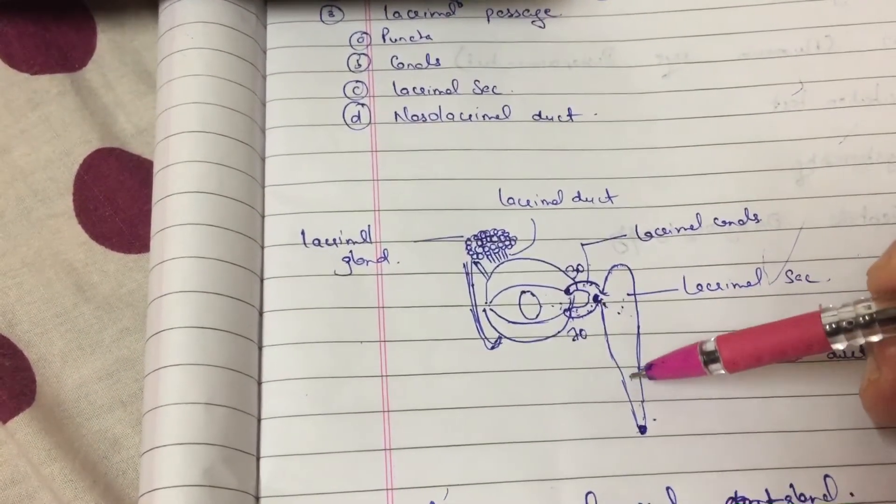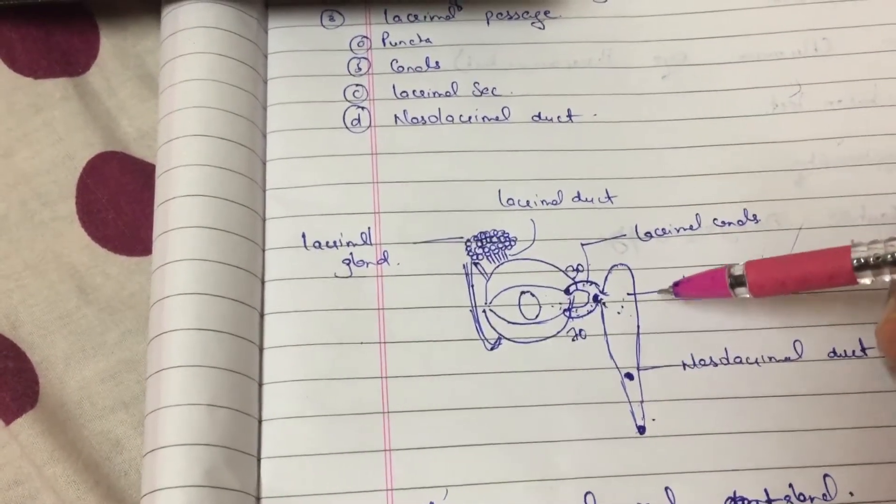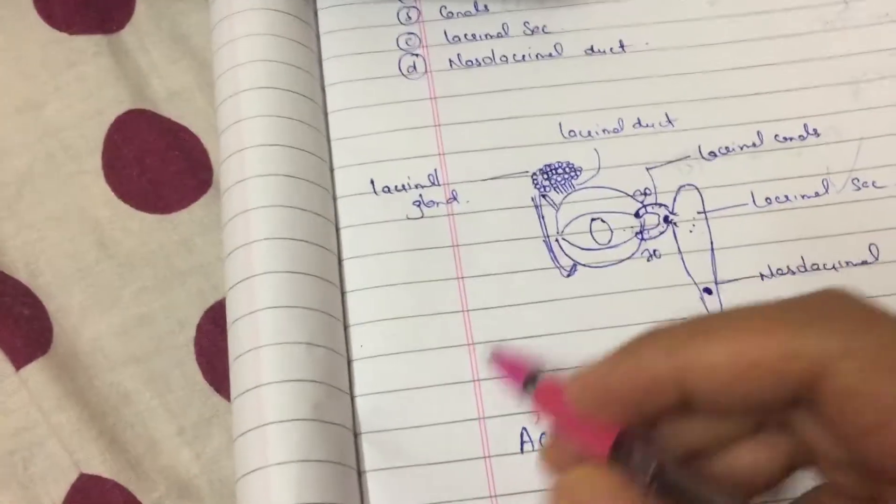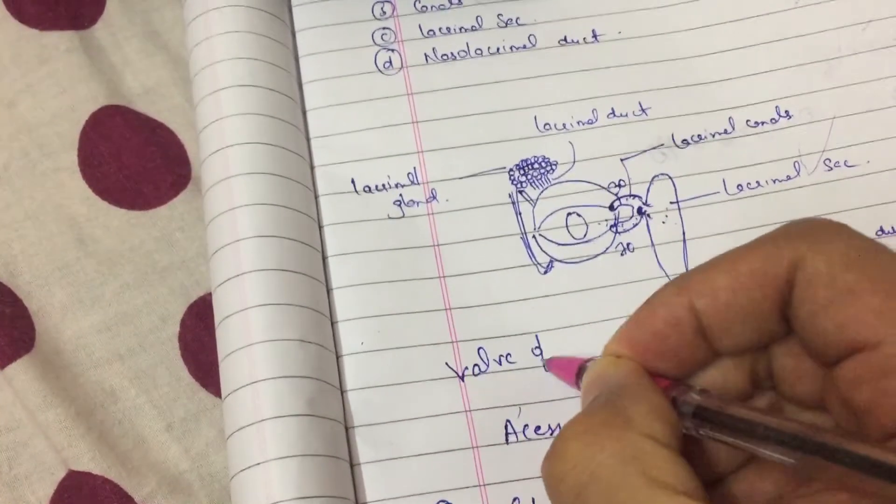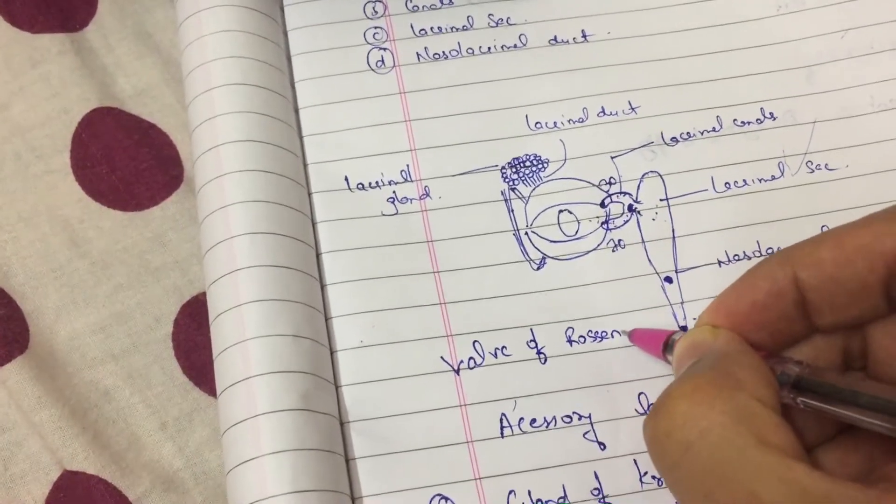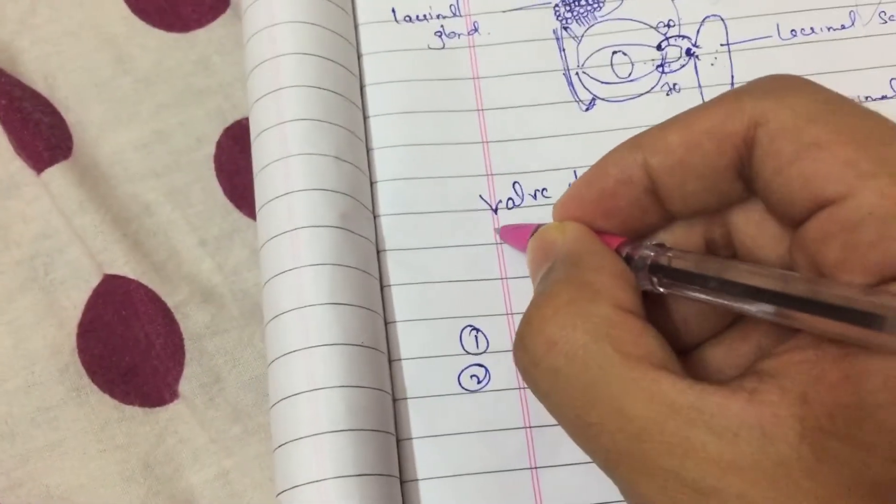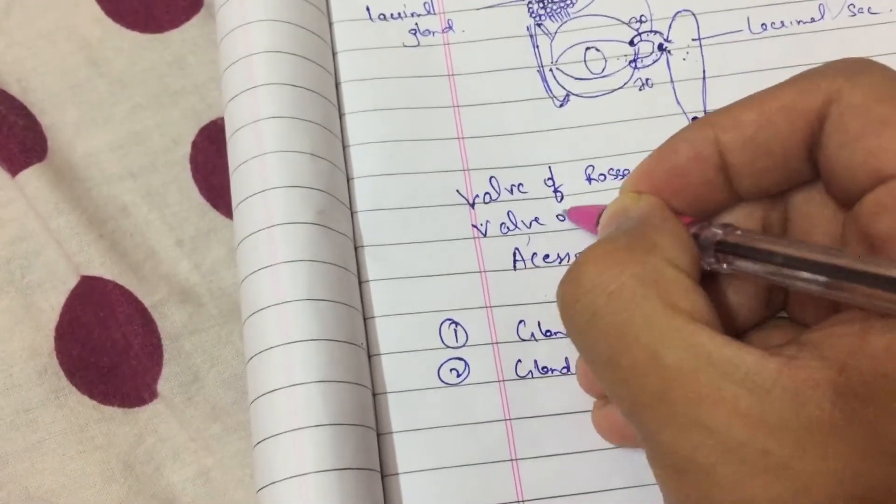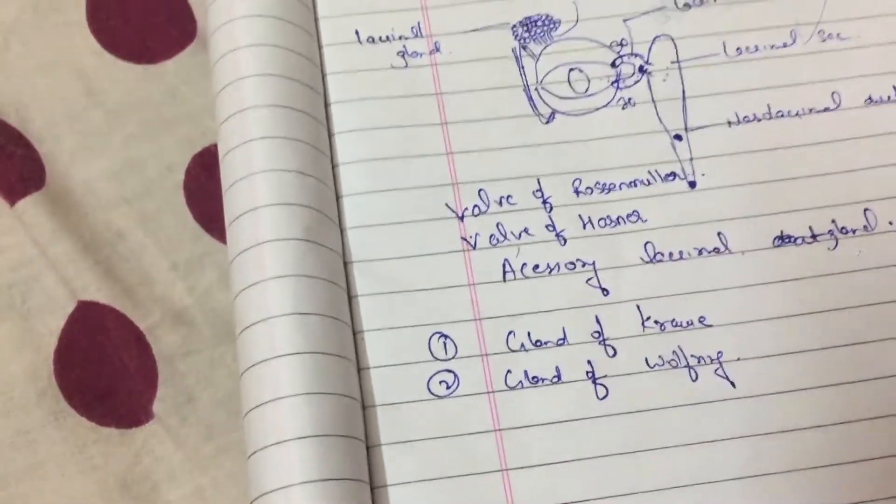Second valve is present in the nasolacrimal duct. That is called valve of Hasner. Let me spell it out for you guys. The first valve is called valve of Rosenmiller and second valve is called valve of Hasner.